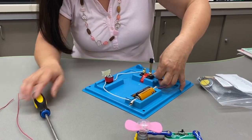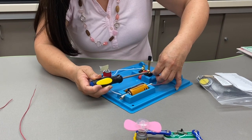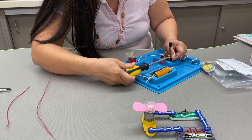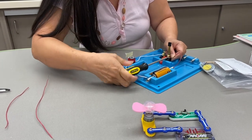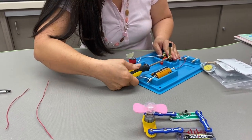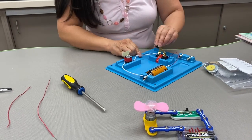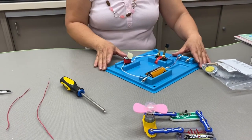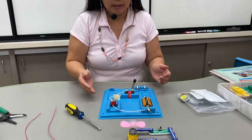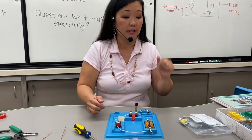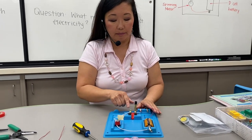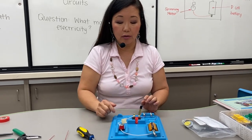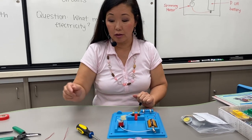Let me go ahead and screw this on. So we're building a conductor detector. Basically, all we're looking for is something to close the circuit. We could use the switch to close the circuit, or we could use another item to close the circuit.